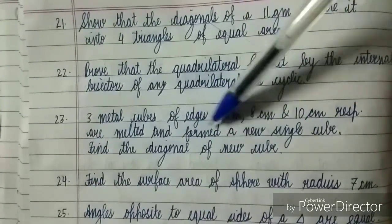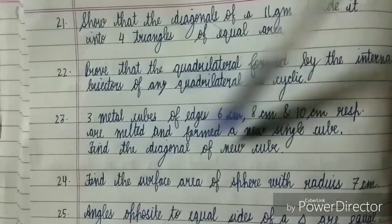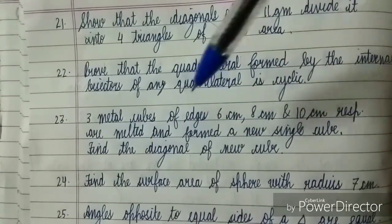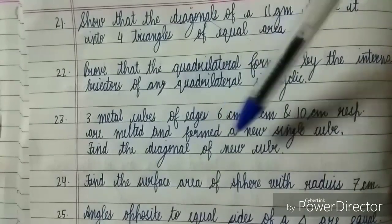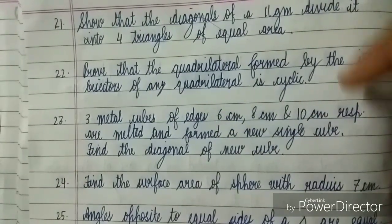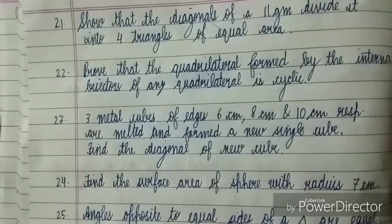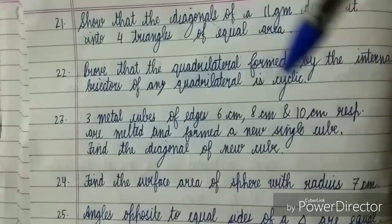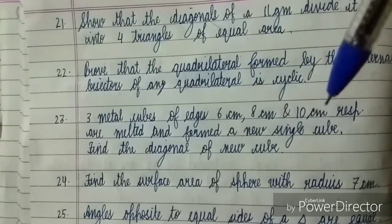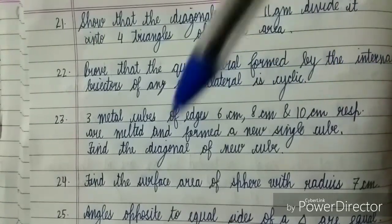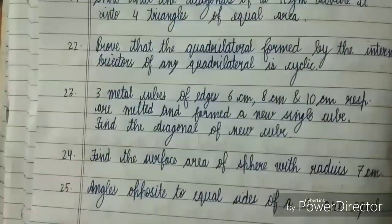Again from Surface Area and Volume, you have this very important question. I've seen this question many times in various sample papers. Three metal cubes of edges 6 cm, 8 cm, and 10 cm respectively are melted and formed into a new single cube. Find the diagonal of the new cube. Very important.